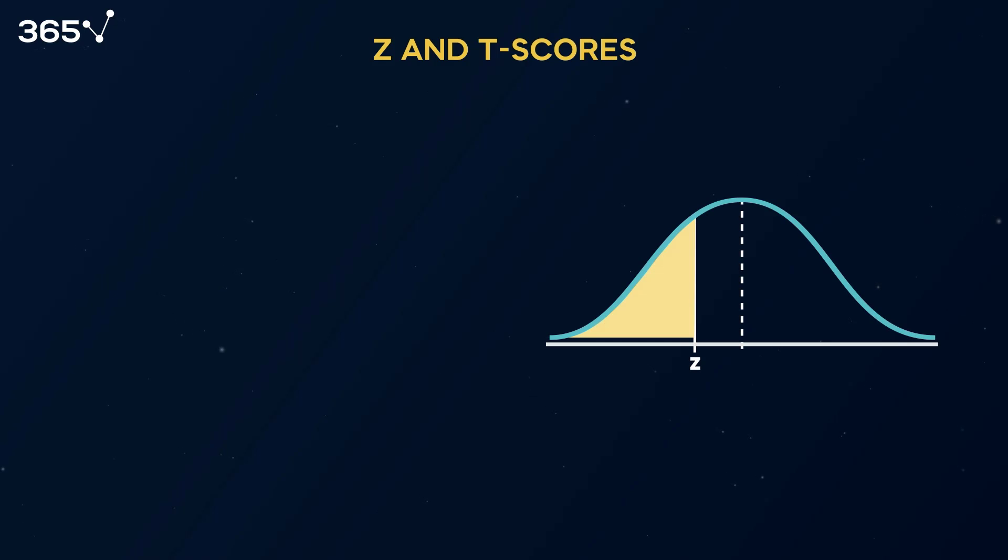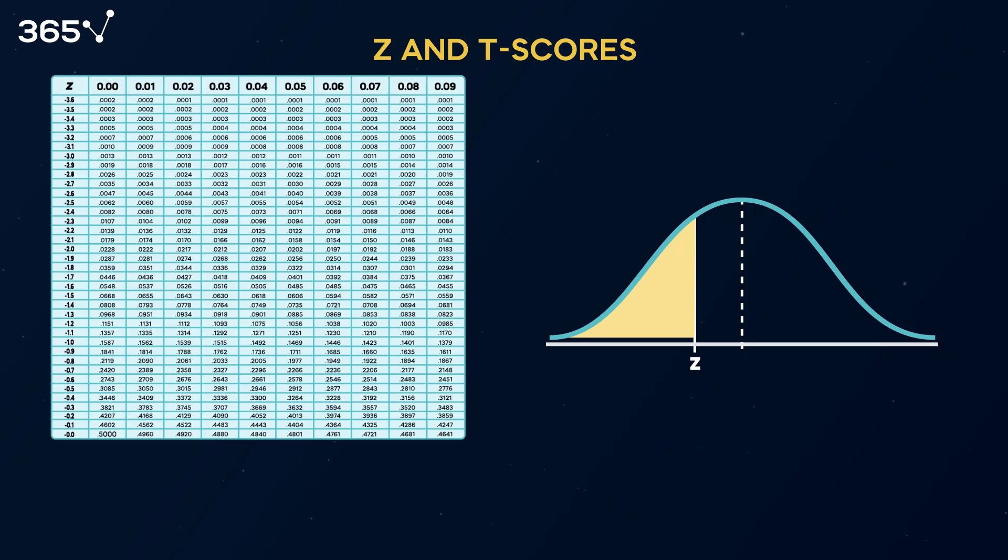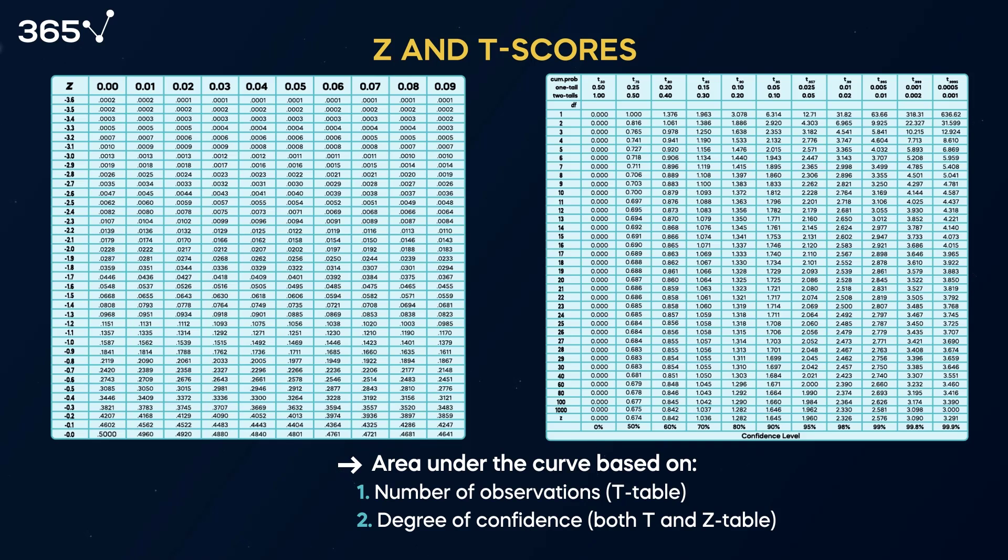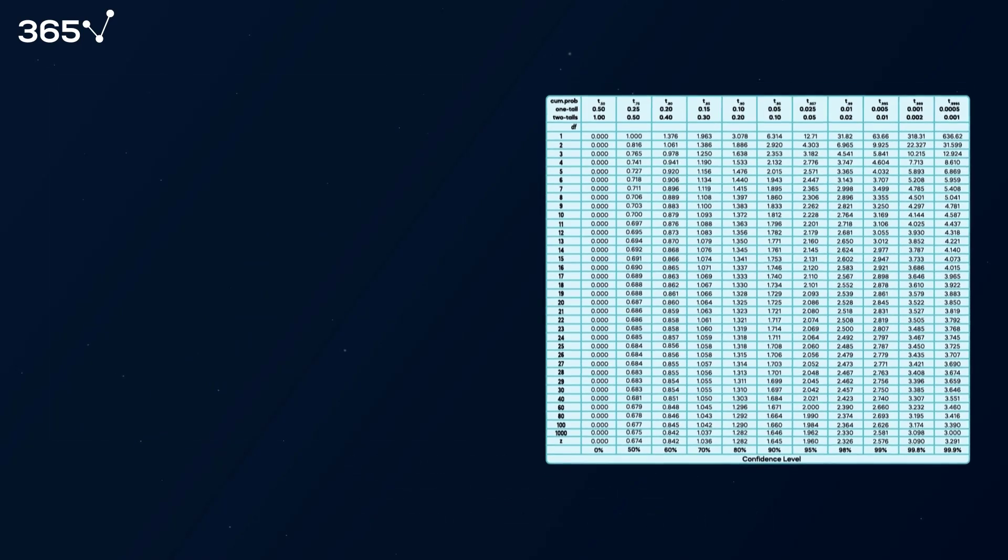Let's understand what t is. Because the normal distribution is perfectly symmetrical, statisticians have been able to create two statistical tables with values. One table, the z table, is for when the population variance is known. And another, the t table, is when the population variance is unknown when working with a sample. Both tables calculate the area under the curve. The t table considers the number of observations in the sample, and the degree of confidence we want to have. The z table needs only the degree of confidence, because we deal with a very large sample or population data. The degree of confidence will vary if we opt for 90, 95, or 99% certainty. Let's see how this works in practice.